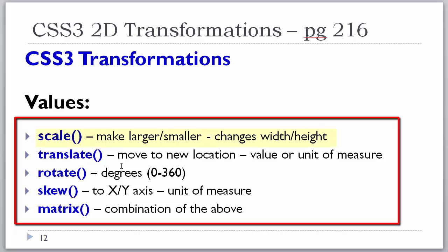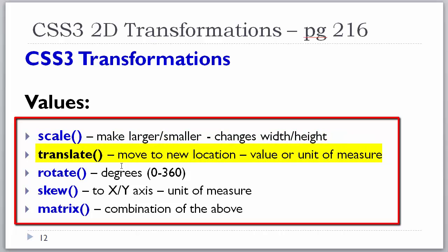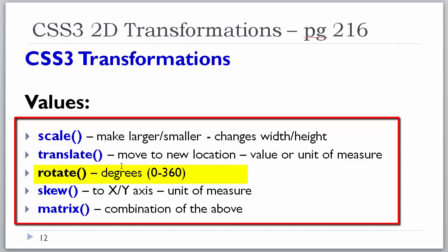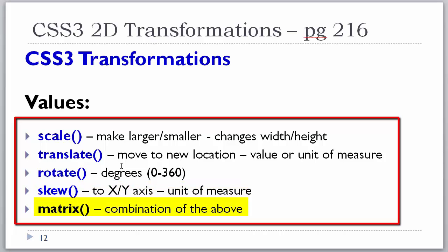These are the values that the transform property takes — they are looked upon as functions. The scale value: in parentheses you pass parameters for how much it will scale, making the object larger or smaller in a relative manner. Translate: moving it to a new location; scale and translate are based on the center. Rotate: rotating something from 0 to 360 degrees. Skewing to the x and y axis. And the matrix, which is a combination of all of the above.